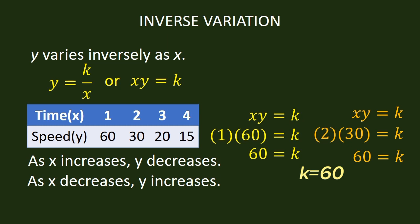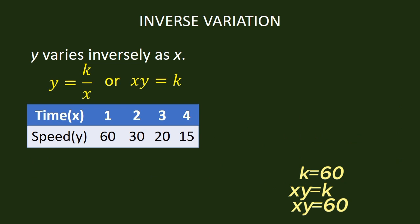Since K is 60, we can substitute this into our equation XY equals K. We now have XY equals 60.